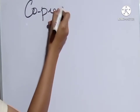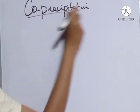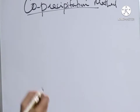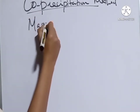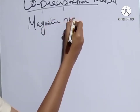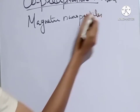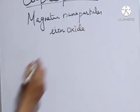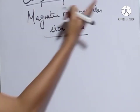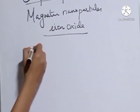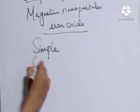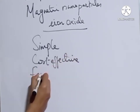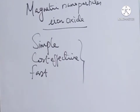The co-precipitation method for the preparation of nanomaterials is actually used for the preparation of magnetic nanoparticles such as iron oxide. The most common nanoparticle prepared by the co-precipitation method is iron oxide. This is a simple, cost-effective, and very fast method used for the preparation of nanomaterials.